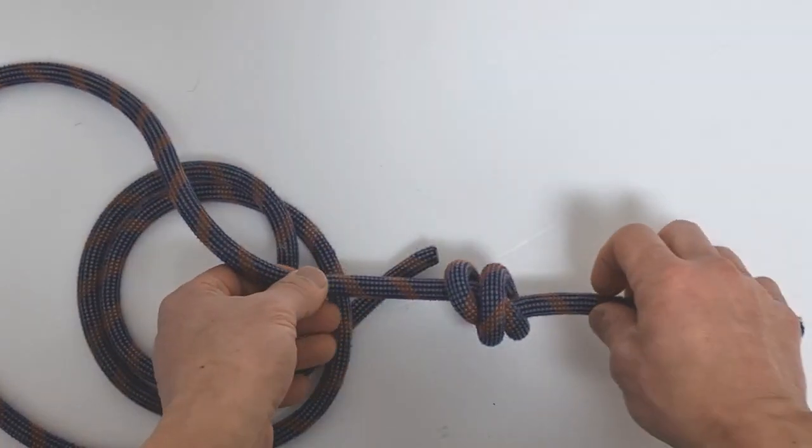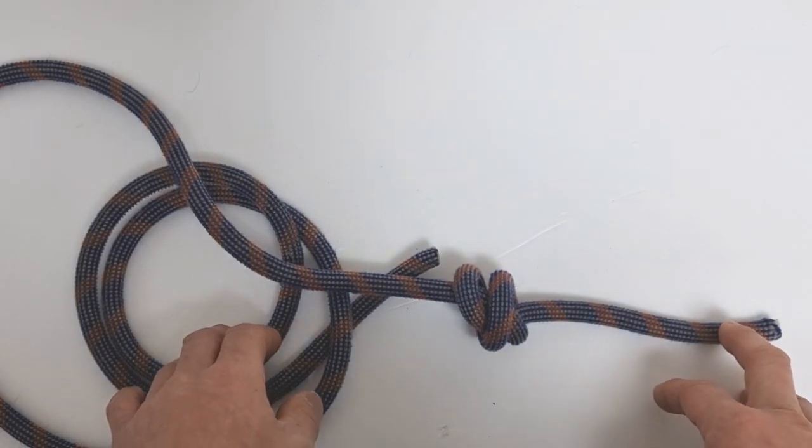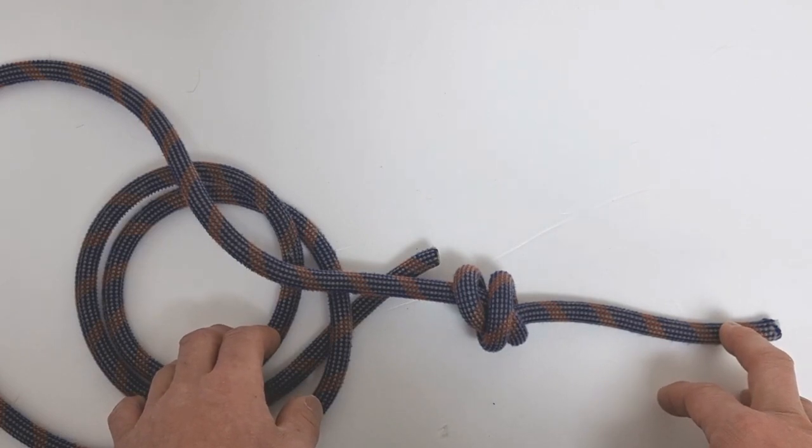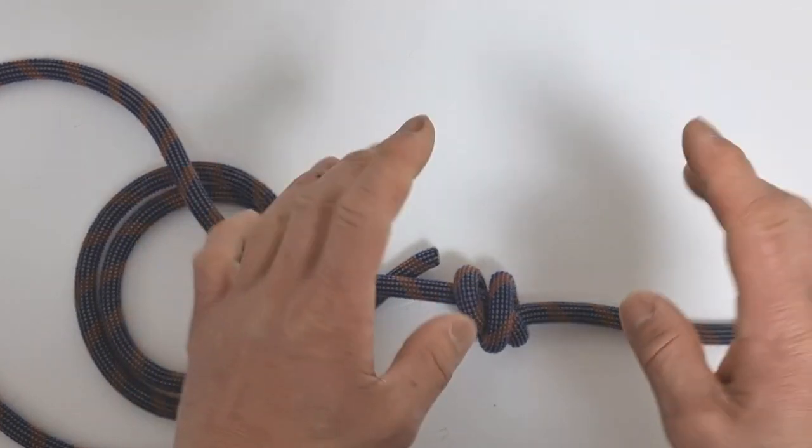So the barrel knot is really great as a stopper knot, and it also is used for more complicated knots like the fisherman. And the fisherman is a really cool knot.